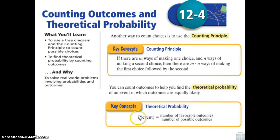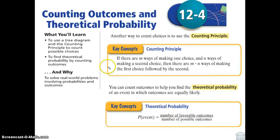So if you notice, P stands for probability. The probability of an event equals the number of favorable outcomes over the number of possible outcomes. We'll go into more detail right now with how to use the counting principle and the theoretical probability principle.